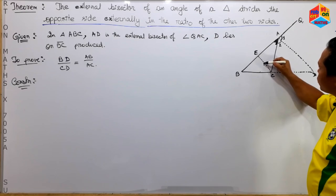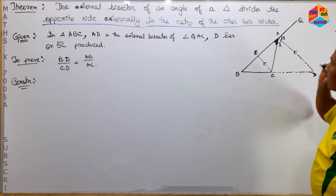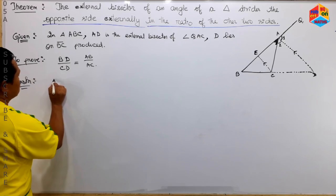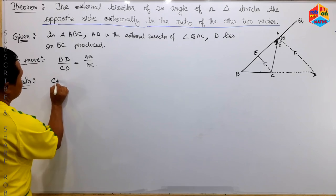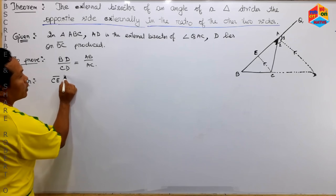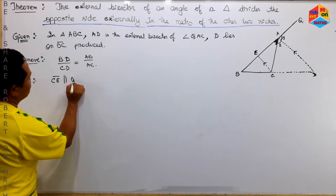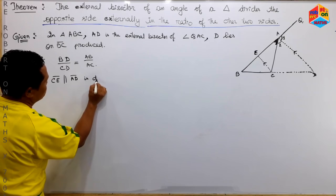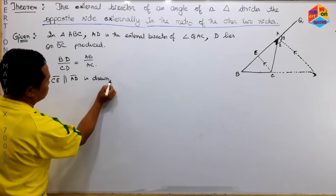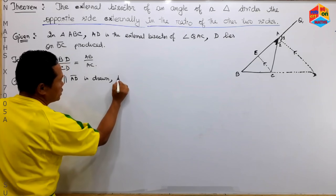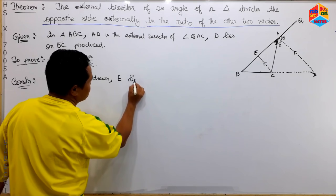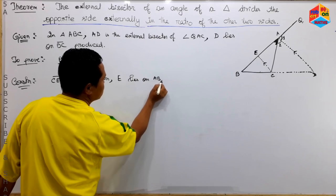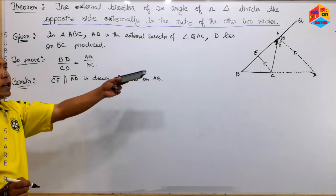Parallel is not in this one. CE parallel to AD is drawn. E lies on AB. This is the case of E.